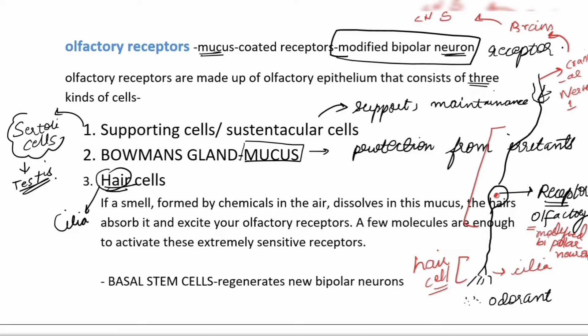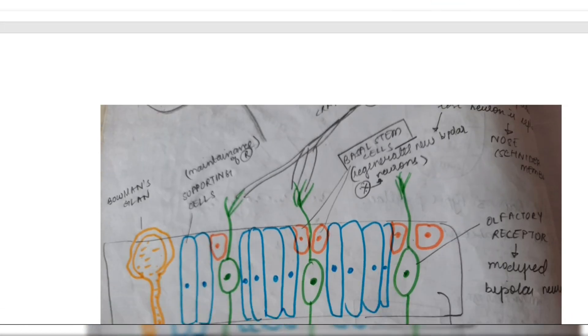These excited receptors transmit signals to the sensory nerves, which are the olfactory nerves. The olfactory nerve is cranial nerve number one, and it is sensory in function. There are about 12 cranial nerves in human beings, and the very first cranial nerve is the olfactory nerve.